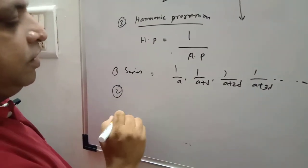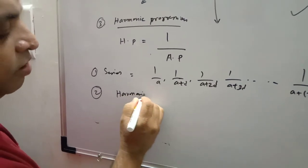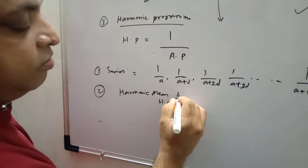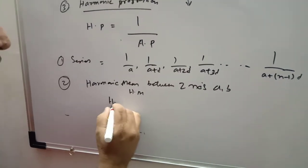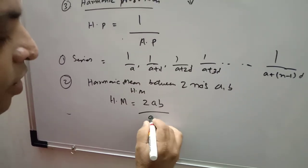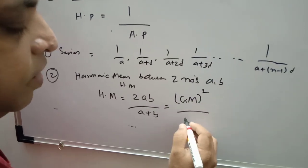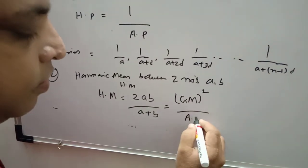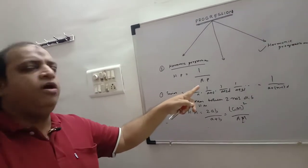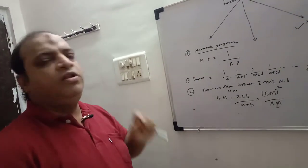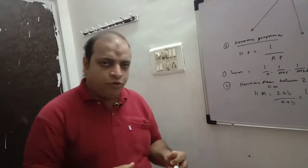The second point for HP is the harmonic mean. Harmonic mean between two numbers a and b is equal to HM equals 2ab divided by a plus b. This formula can also be written as GM squared divided by AM. To solve any problem related to harmonic progression, apply the formulas related to AP, which is arithmetic progression, and then take the reciprocal to get the harmonic progression. This completes the details of arithmetic progression, geometric progression, and harmonic progression.